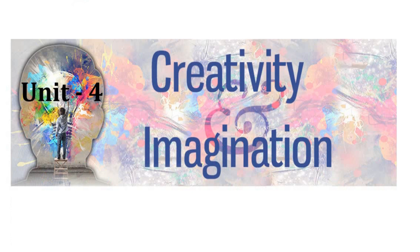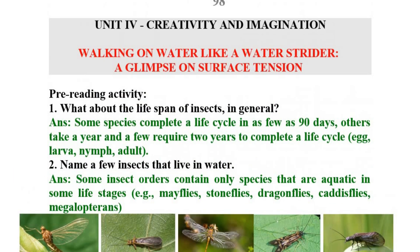In this topic, we cover lesson explanations and task answers on creativity and imagination. The passage is titled 'Walking on Water like a Water Spreader — A Glimpse on Surface Tension.' In this passage, we discuss surface tension. That is a pre-reading activity.